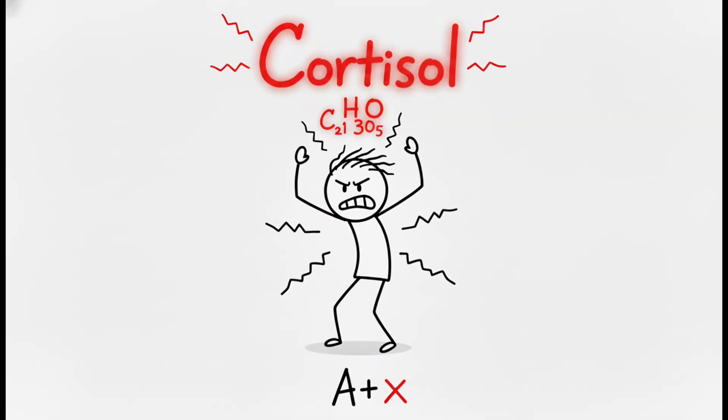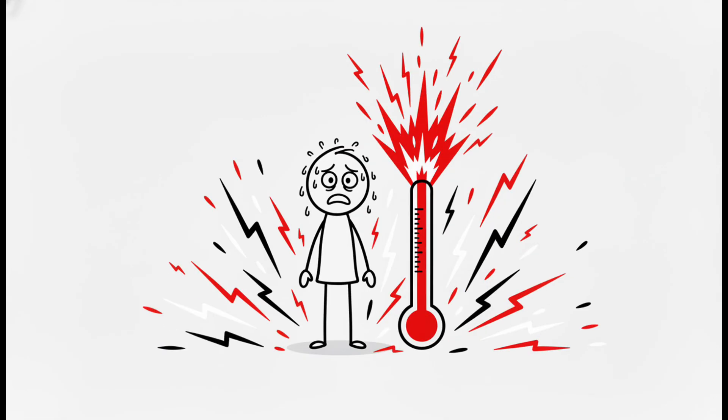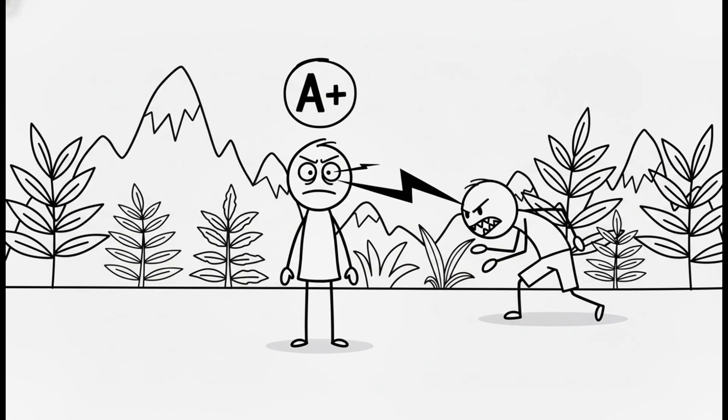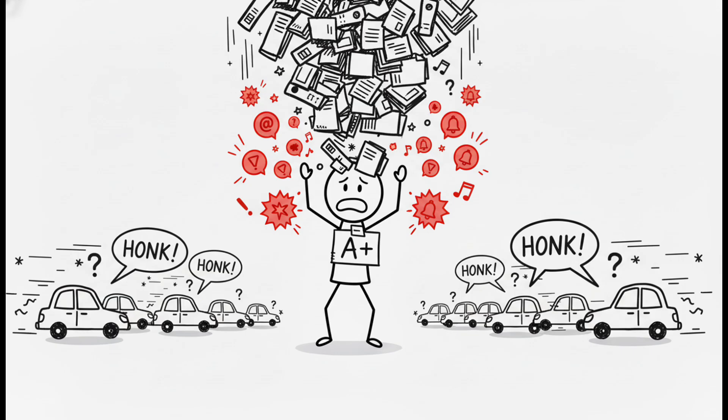And here's the kicker. Type A individuals are biologically wired for stress. You produce higher baseline cortisol levels, the body's stress hormone. In ancient times, that hyper-awareness kept you alive. Today, it means deadlines, traffic, and notifications hit you harder, right down to your cells.